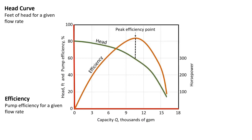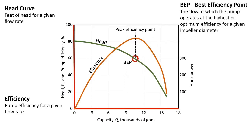If we come down from that peak efficiency point to where it intersects the head curve, we can find the best efficiency point, the BEP. The best efficiency point is the flow at which the pump operates at the highest or optimum efficiency for a given impeller diameter. Coming across to the left from that point, we see that the head is about 60 feet, and the flow at that point is approximately 10,500 gallons per minute.